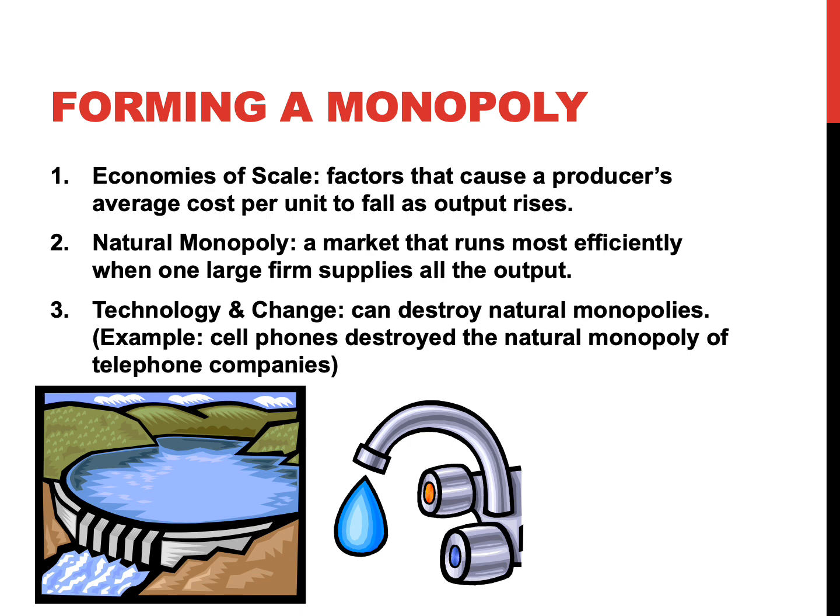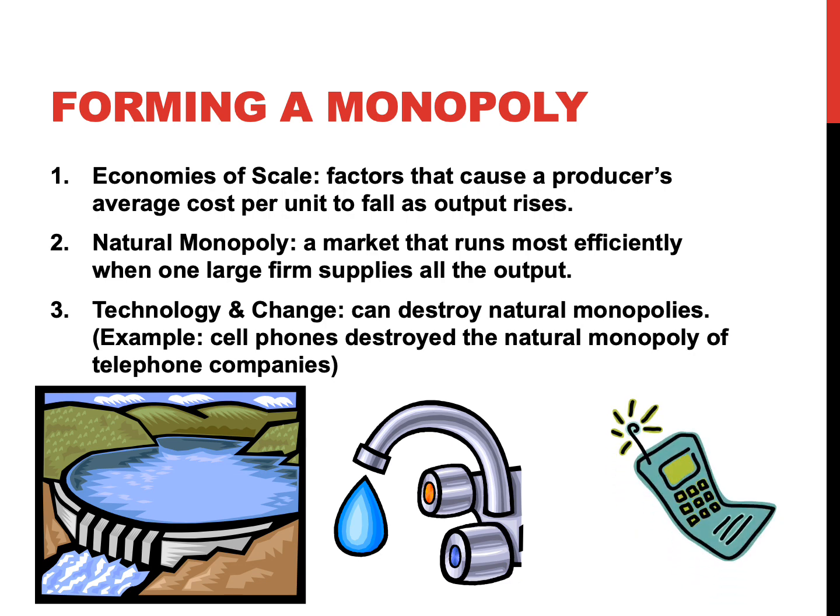Sometimes monopolies can be destroyed through technology. When new technology comes along that knocks down barriers to entry, things that were once monopolies aren't anymore. Think of cell phones: there was a time when telephone lines were everywhere and very expensive to install throughout a community — much like the water company. But as cellular technology changed and towers could be placed here and there, you no longer needed to rely on telephone wires everywhere. Many of the barriers to entry that prevented competition have gone away, and monopolies have been destroyed.